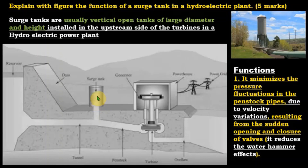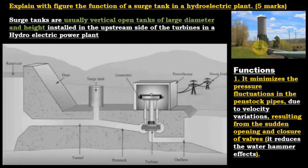With a diagram, this is a typical surge tank in a hydroelectric power plant. The image of the surge tank is shown here as a cylindrical vertical tank in the layout of the hydroelectric power plant.